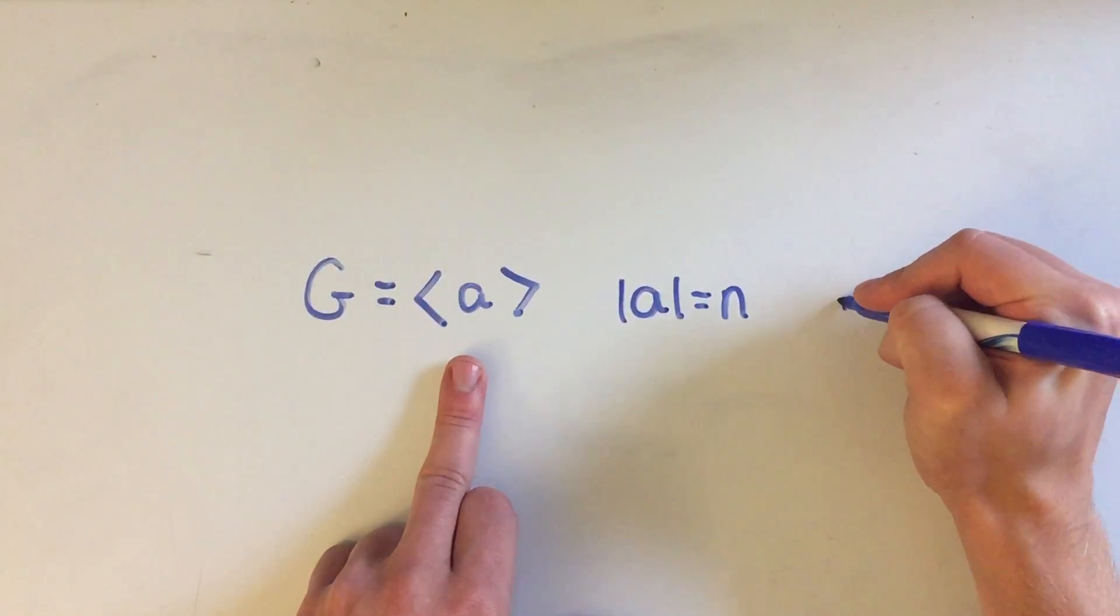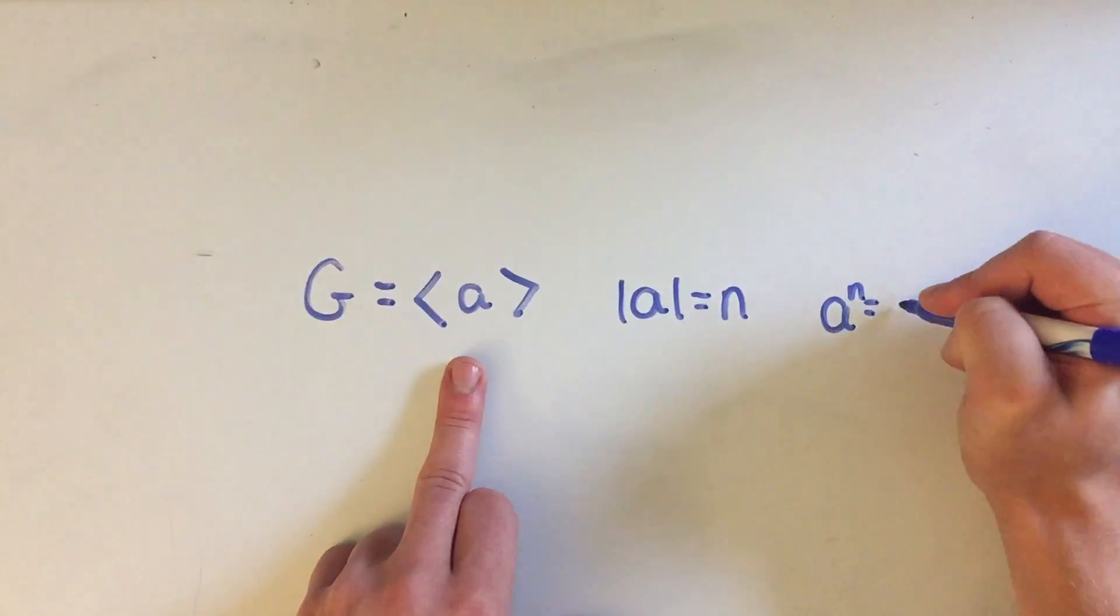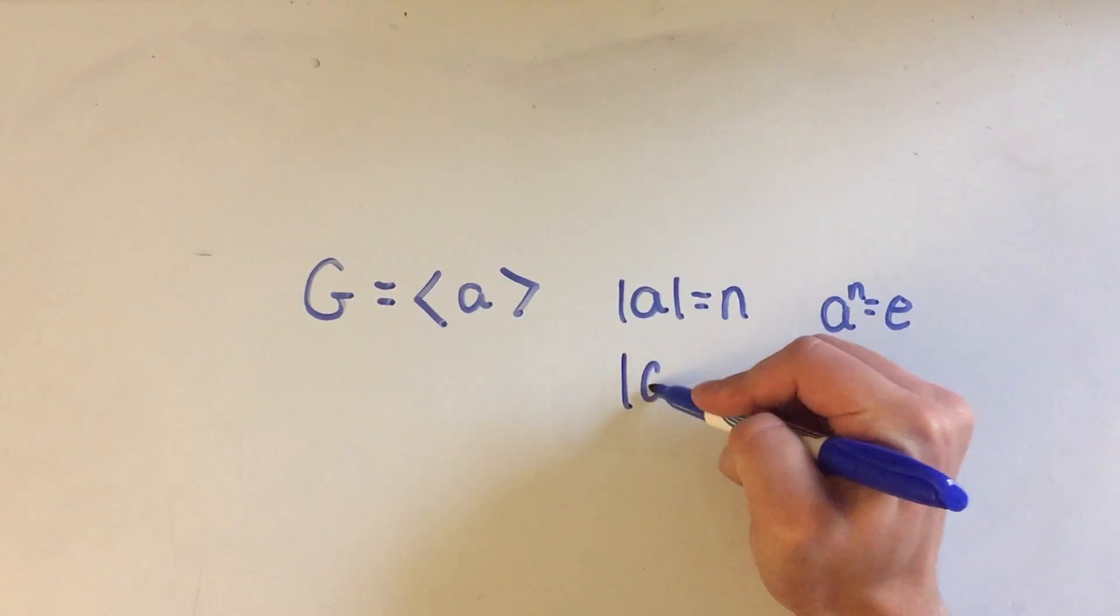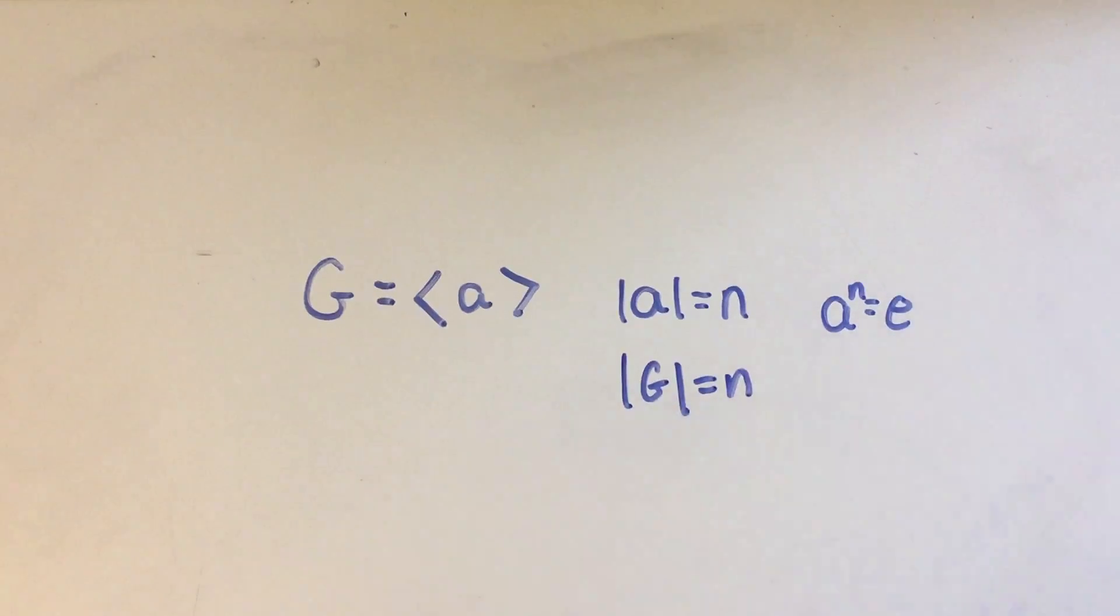And just remember that that means that A raised to the N power is equal to the identity element. Well, if G is generated by A and the order of A is N, that means that there are N elements in G, or that the order of G is also N.